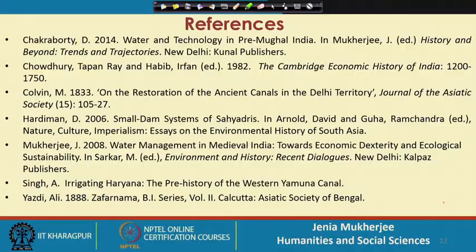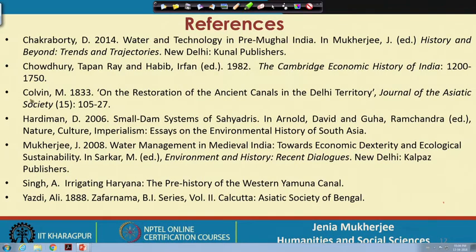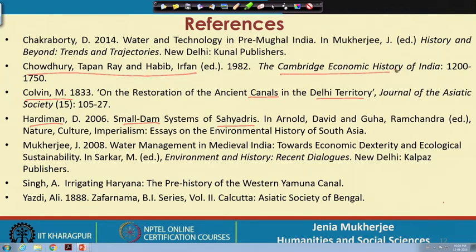The references for this lecture include Major Colvin's research on canals in Delhi, Hardiman's work on small dams in the Western Ghats, Tapan Rai Chaudhuri and Irfan Habib's edited volume on the Cambridge Economic History of India, and Abha Khan's chapter on irrigating Haryana. These are some of the key references to consult for more detailed information on what was discussed in this lecture.